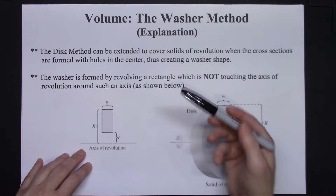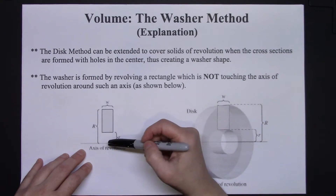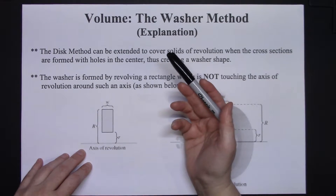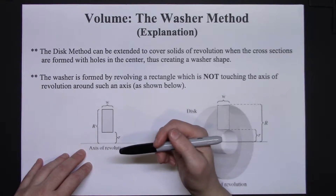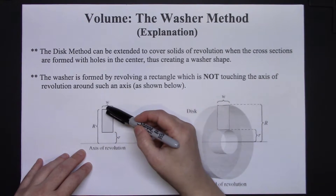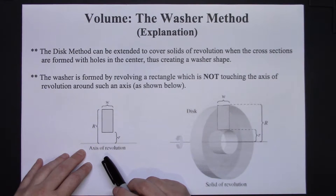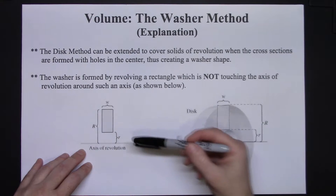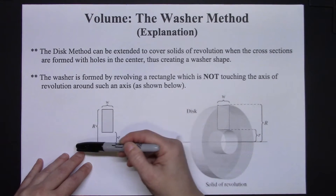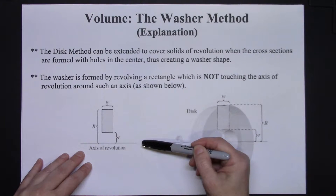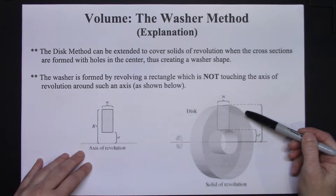So now we are doing volume — I said area, just in general, is what I was trying to get at. I'm going to use top curve and bottom curve in my formulas rather than outside and inside radius. Visualizing that your representative rectangle is perpendicular to your axis of revolution and not touching it — that's when this washer is formed.